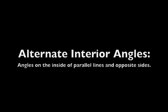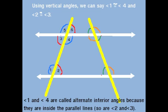Knowing about vertical angles can help us with new angles created by the parallel lines and the transversal — these are alternate interior angles: angles on the inside of parallel lines and on the opposite sides. Angle 5 is a corresponding angle with angle 1, and angle 5 is also a vertical angle to angle 4. Thus angle 1 and angle 4 are congruent alternate interior angles on the inside of the parallel lines. Similarly, angle 6 is a corresponding angle with angle 2, and angle 6 is also a vertical angle with angle 3, so angle 3 and angle 2 are alternate interior angles as well.